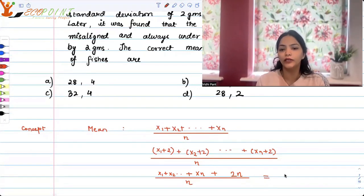Now if you split it up, what are you getting? You're getting the old mean plus 2n by n, which gives you 2.